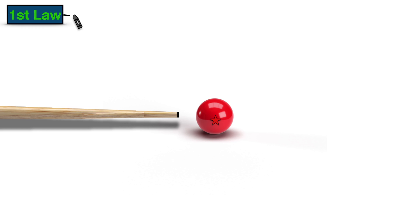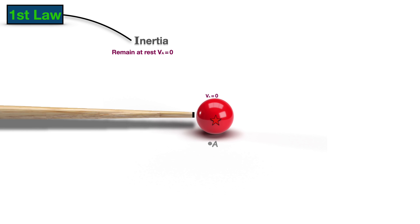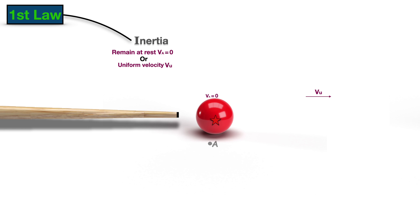Newton's first law explains the concept of inertia. To understand this, let's take the example of this ball. The ball sitting at point A will remain at rest unless an external force is applied to it. Now, as soon as the stick hits the ball, the ball starts moving and as there is no opposing force, it will keep moving with a constant or uniform velocity until an external force is applied to it. This property of objects to retain their state of either rest or uniform motion in a straight line is called inertia, and that is exactly what the first law of motion is all about.